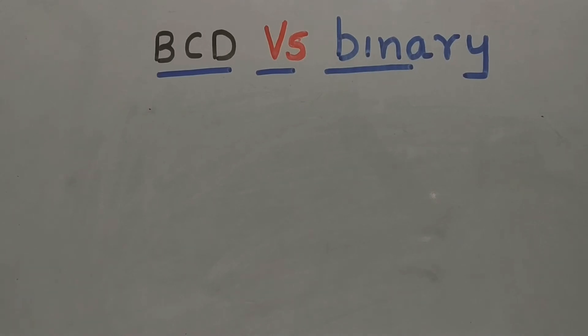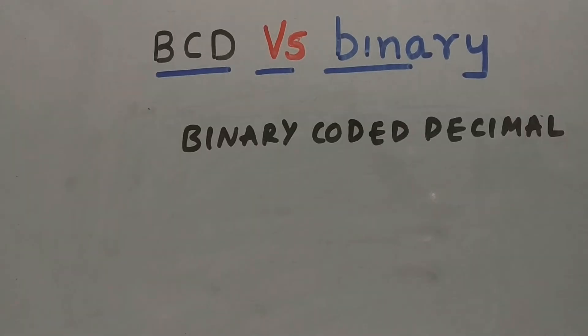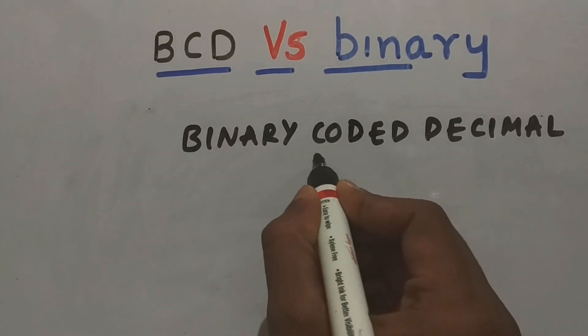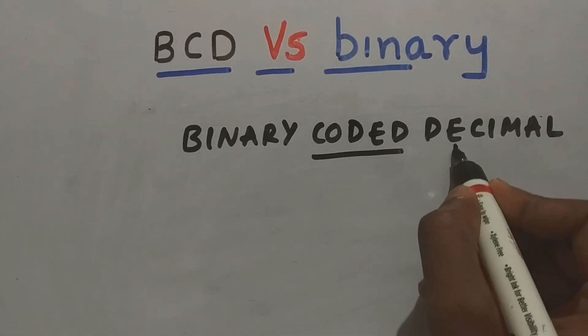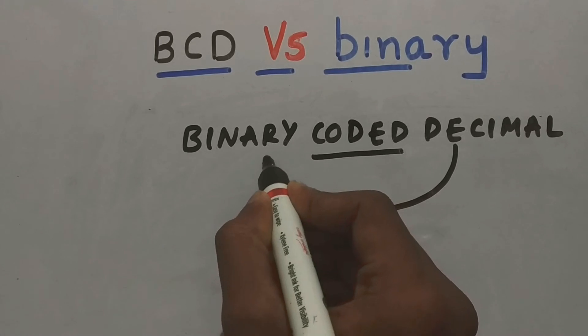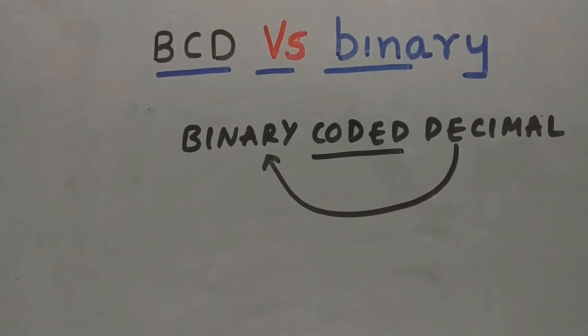Before we go into the differences, I would love to talk about BCD first. BCD stands for binary coded decimal. What does coded mean? Understand this, a decimal digit is being coded in binary.